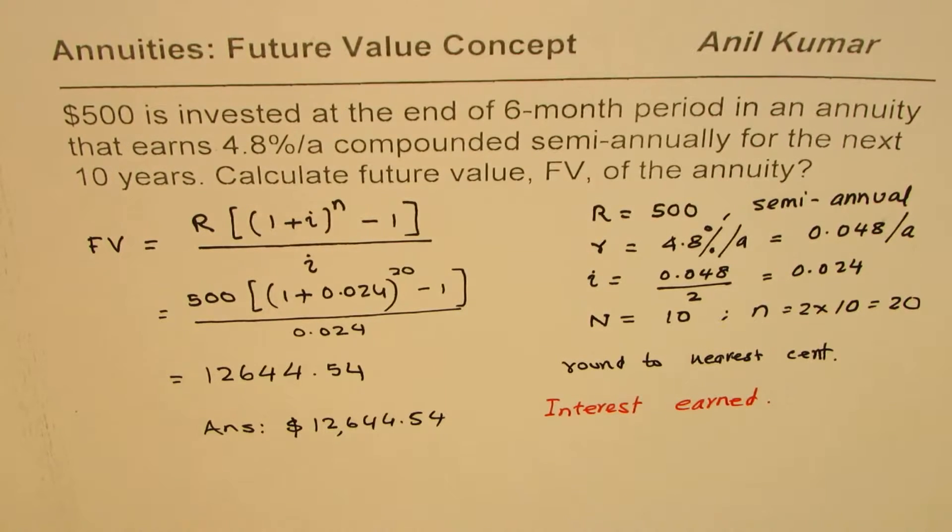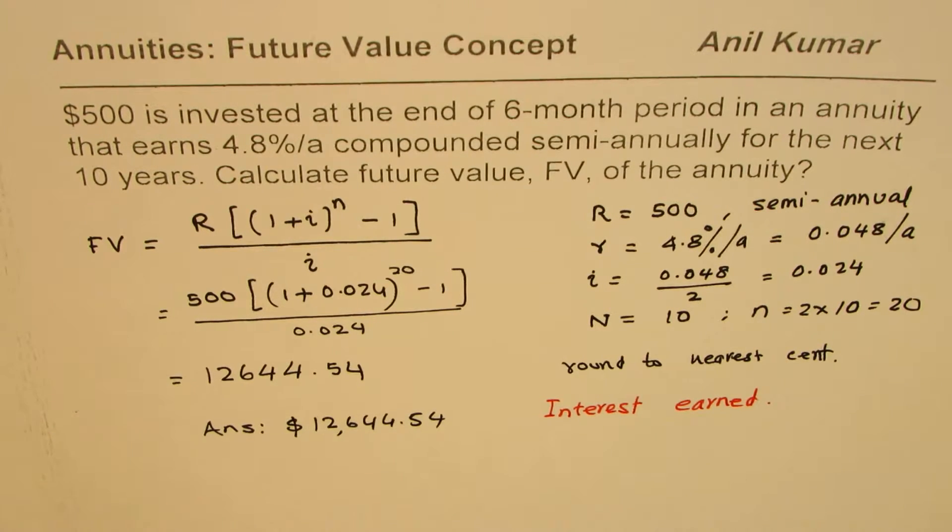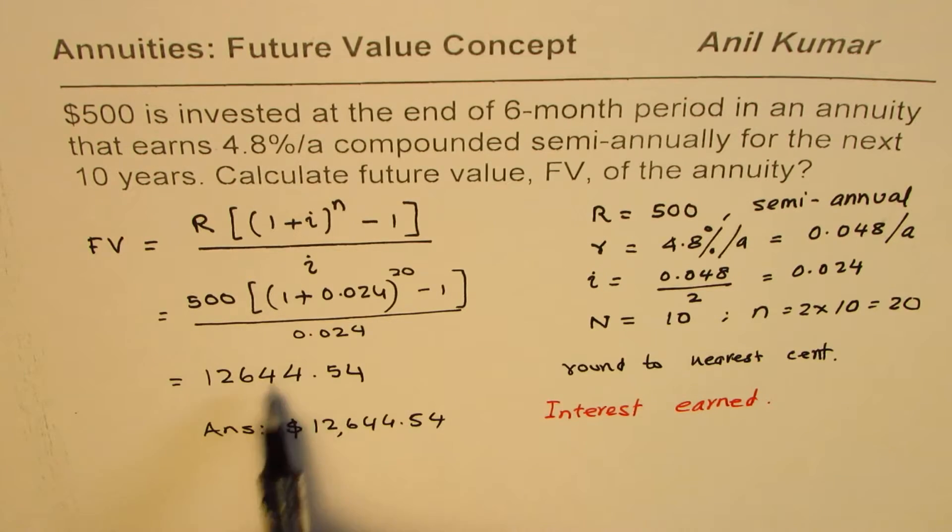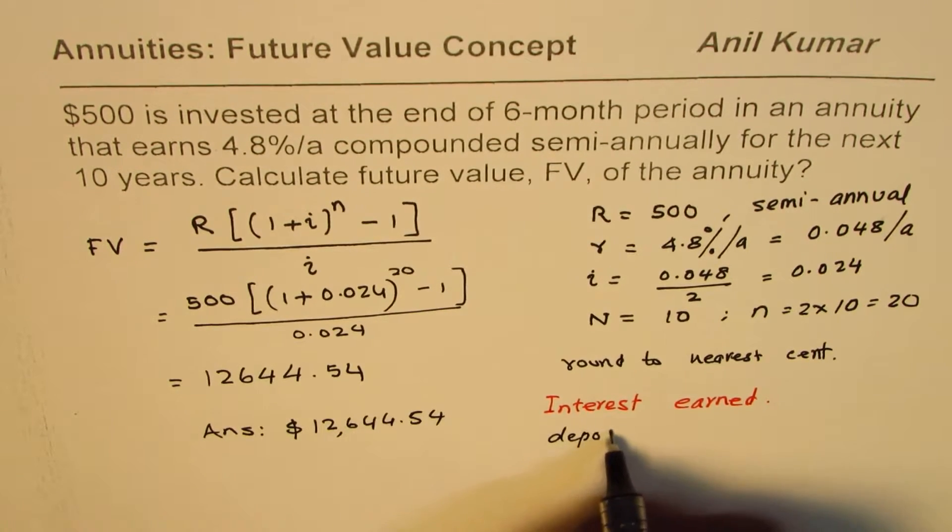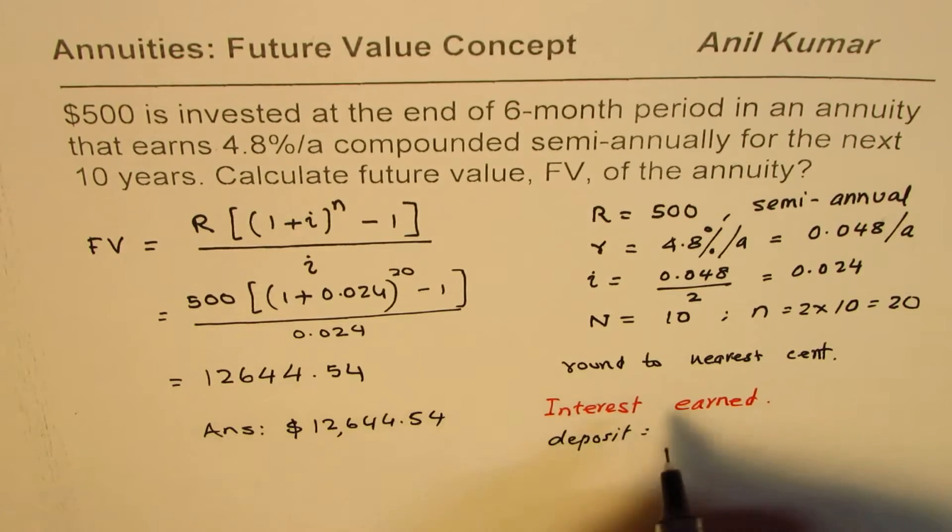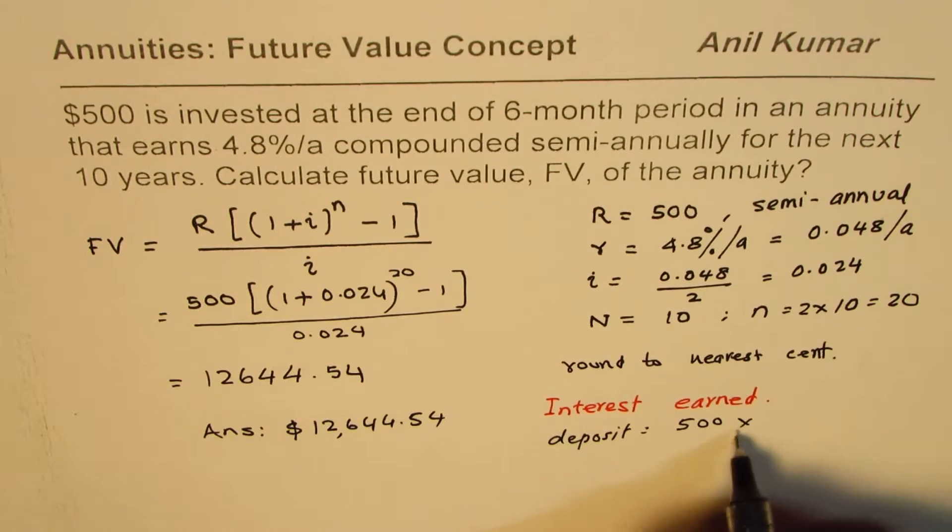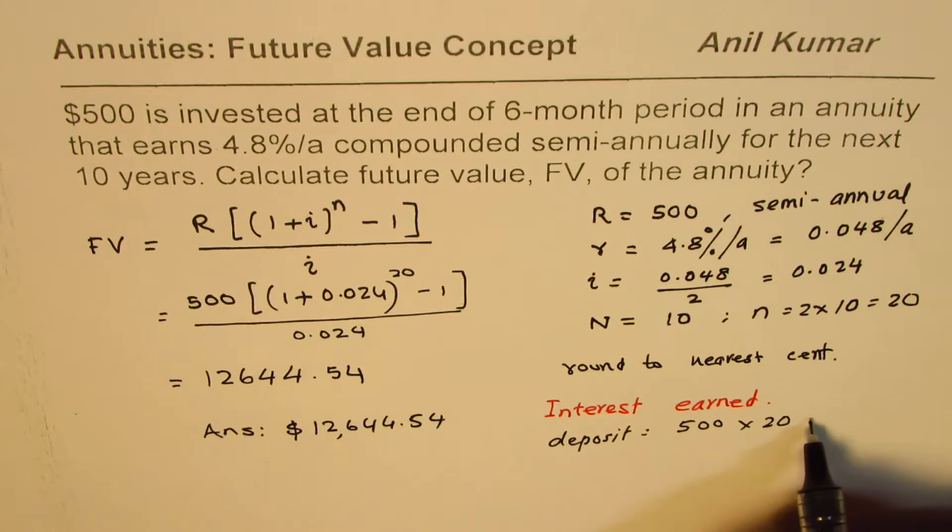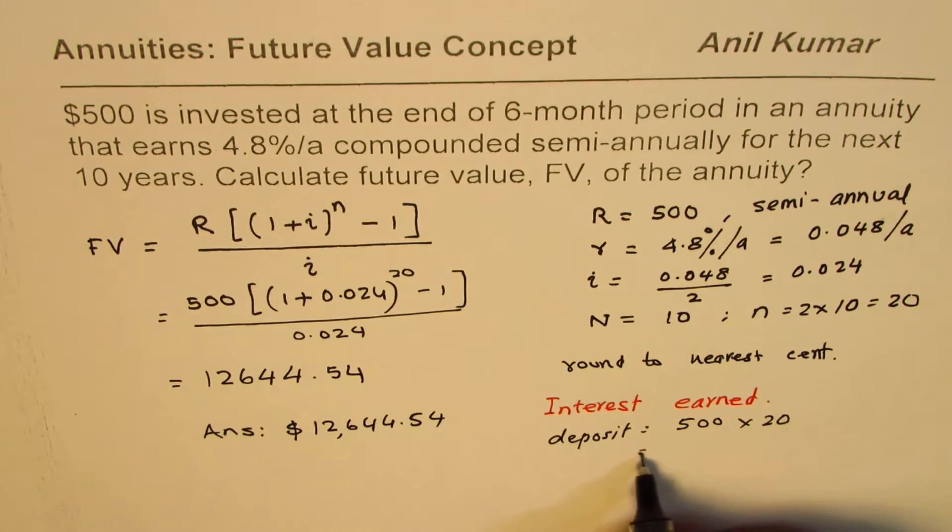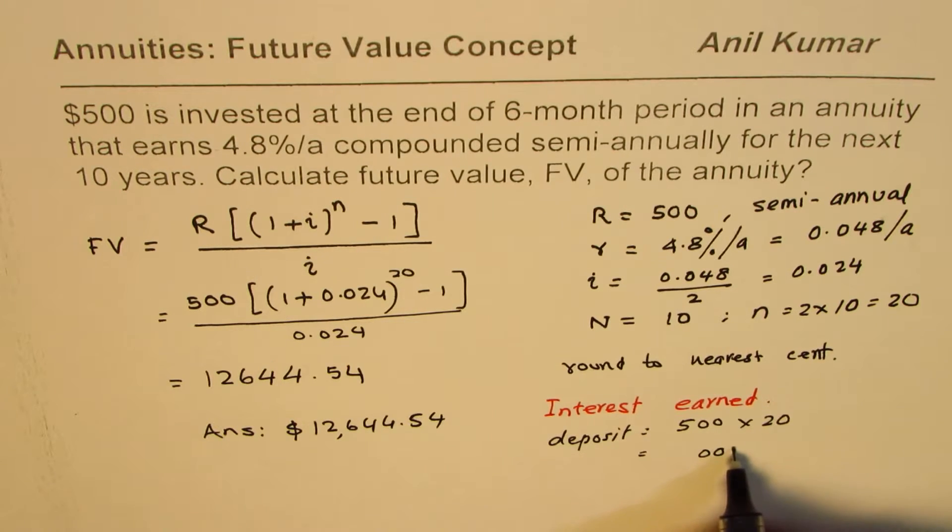How will you do that? Think about it. Interest earned - this is the final amount future value, how much did you deposit? So deposit was how much? Deposit was 500 for how many times? n is 20, 20 times. When you multiply this you get 3 zeros and 2 times 5 is 10, so you deposited $10,000.